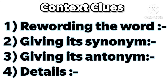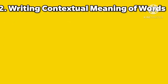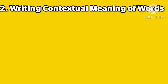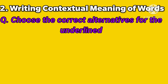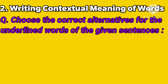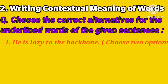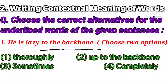Let's see the exam question type for this chapter. The question type is: 'Choose the correct alternatives for the underlined words of the given sentences.' The first sentence is: 'He is lazy to the backbone.' The underlined phrase is 'to the backbone.' Choose from two options.